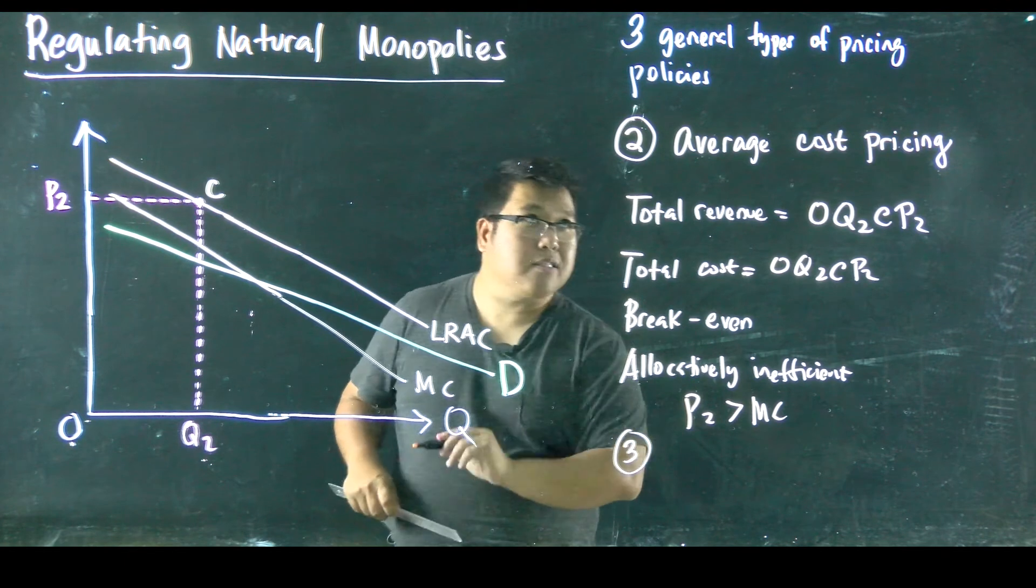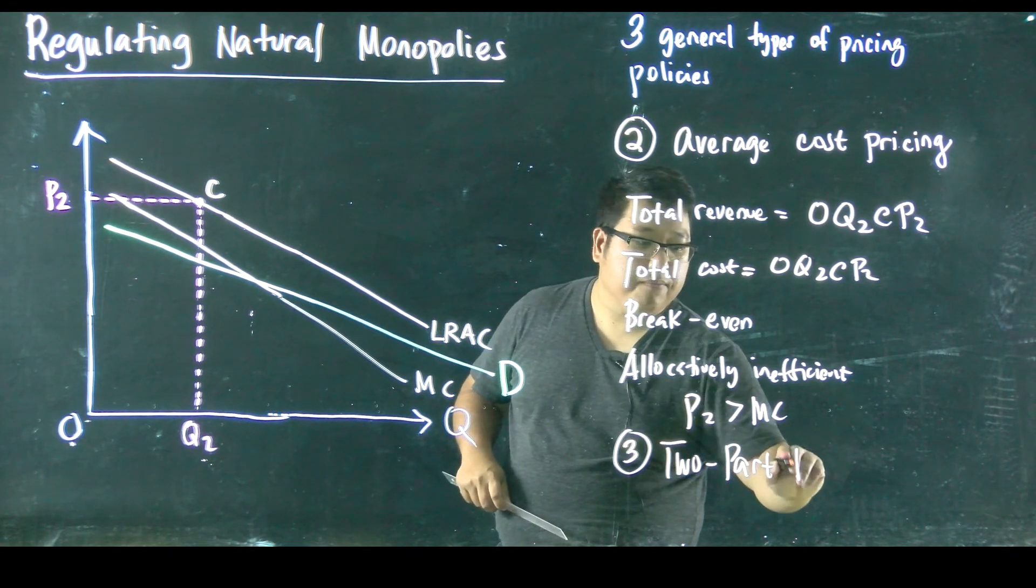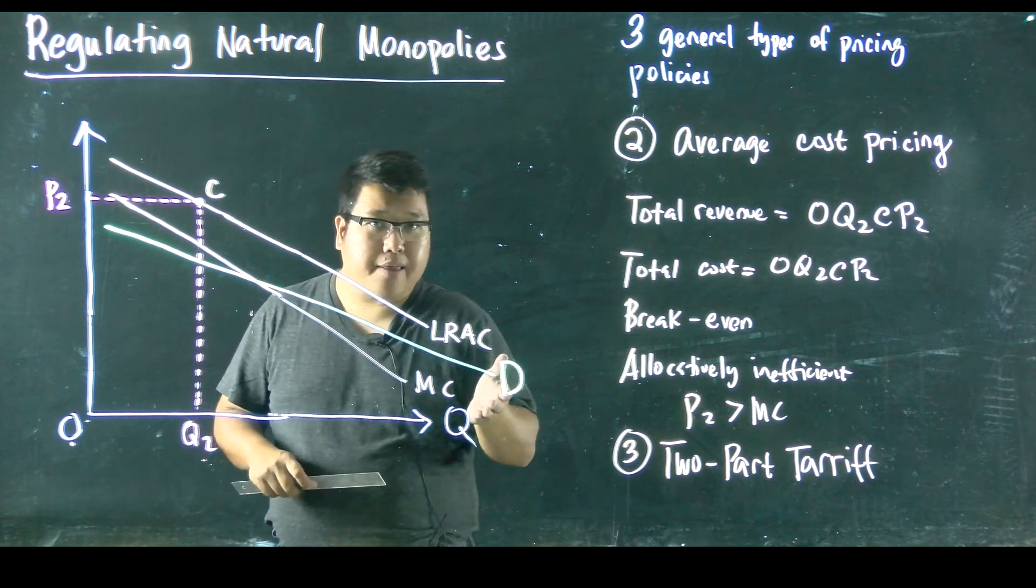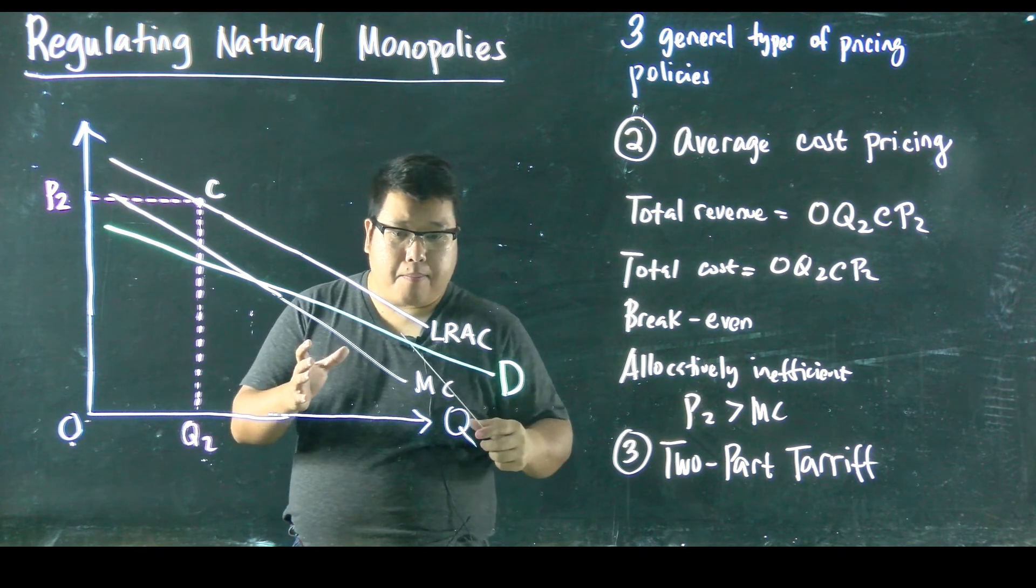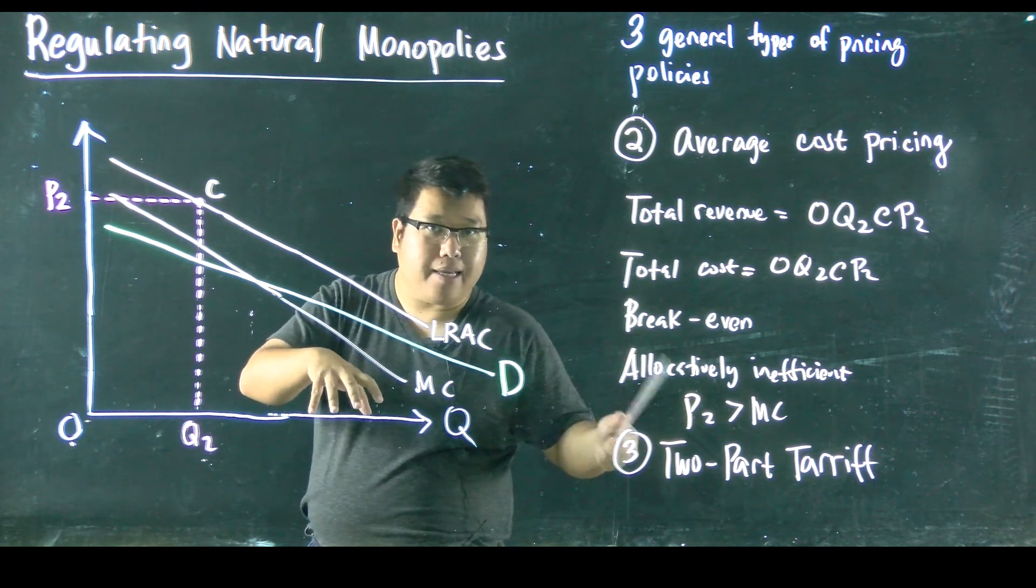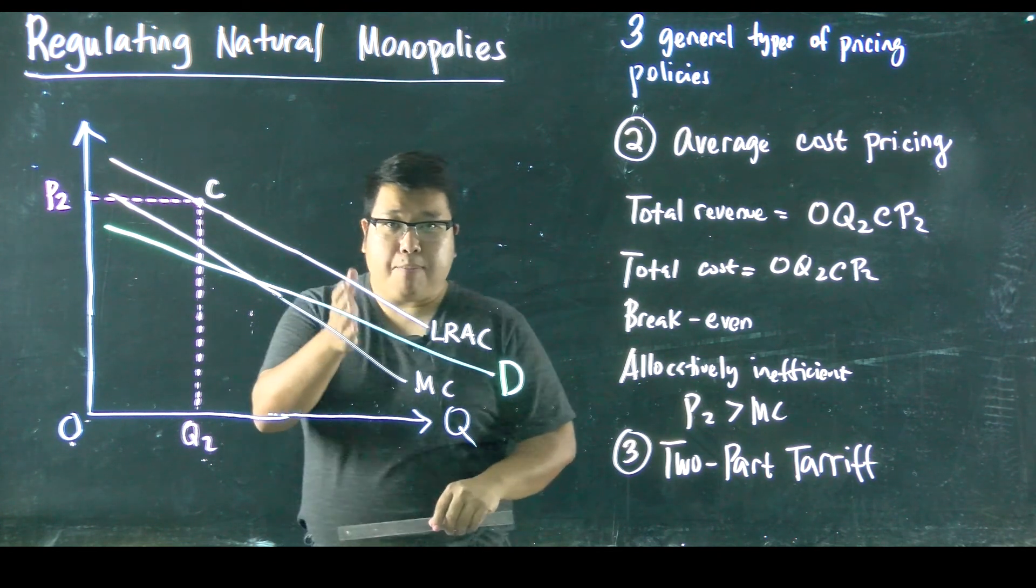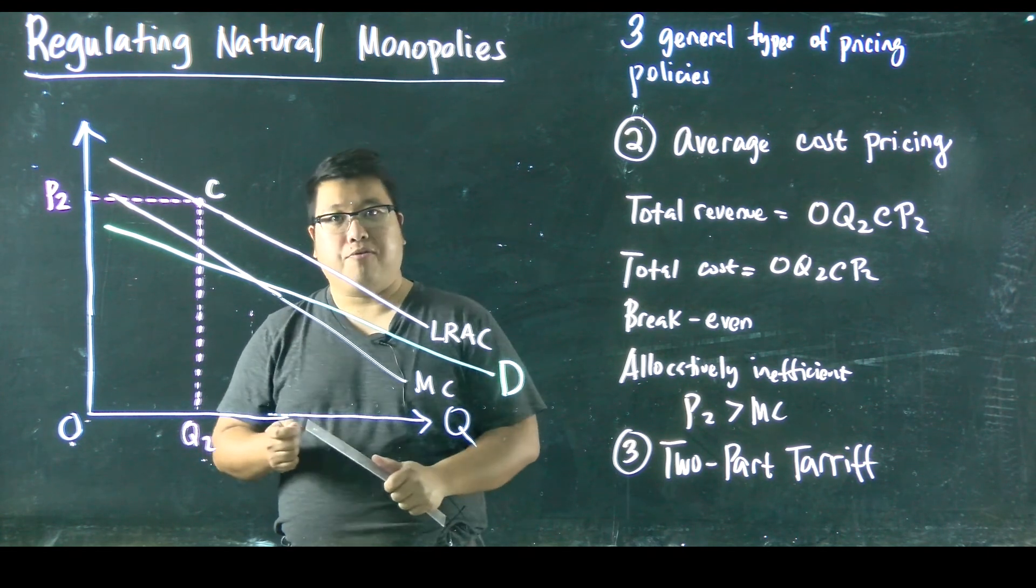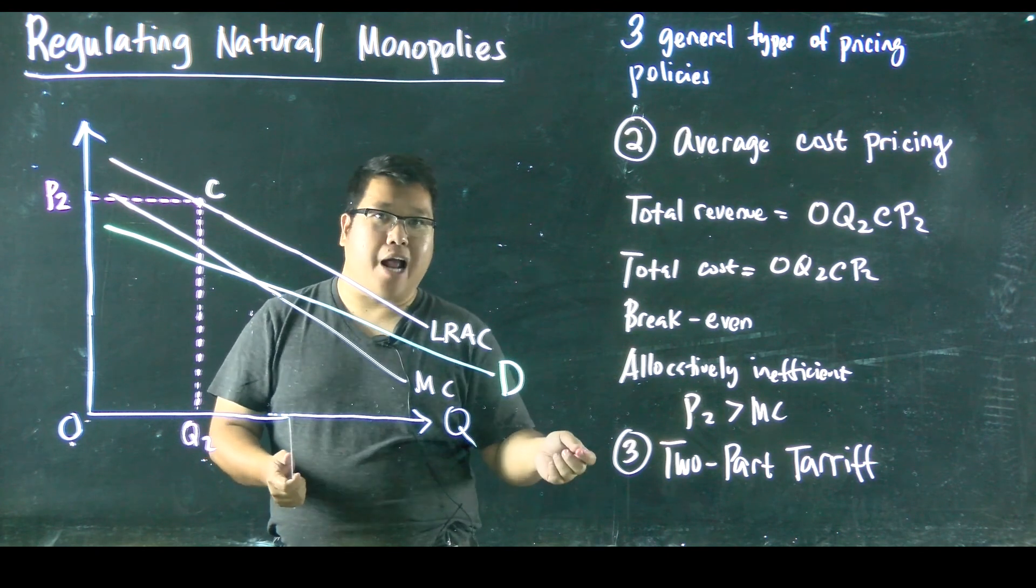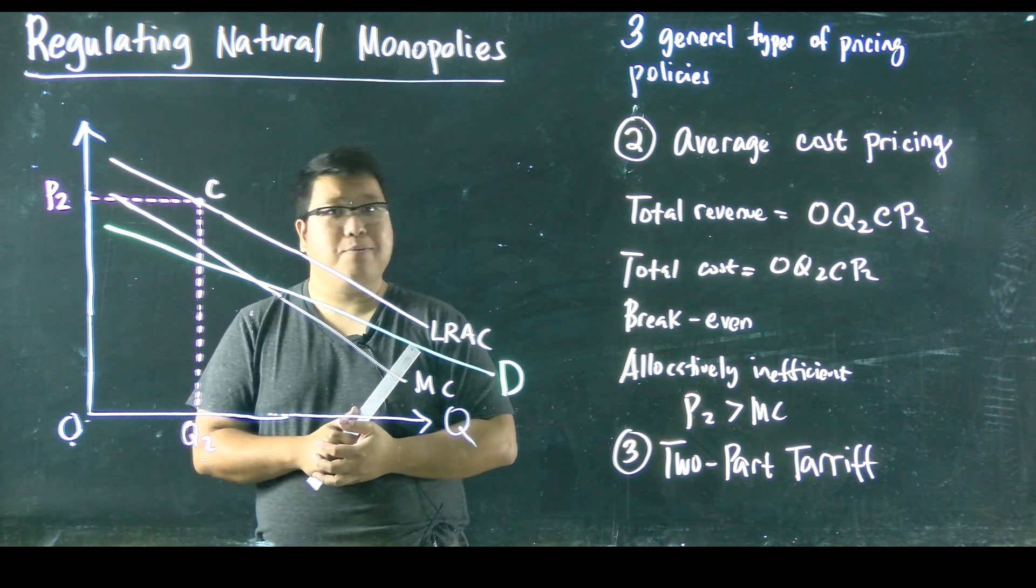A third method, so the third and last method for a pricing policy of this type, is what we call a two-part tariff. So a two-part tariff means that the government will set a price in such a way that there is a price that's set to acquire that good or service. And then if consumers would want more of that good, then they can pay something extra. A good example of this would be cable TV. So if we subscribe to cable, we pay basic cable. And on top of the basic cable, we pay for packages that we like. That's a classic example of a two-part tariff. So we pay a basic cable fee in order for us to have the cable service. And then we pay some more to get the other channels. So that's what we mean by a two-part tariff. So that's it for general types of pricing policies.